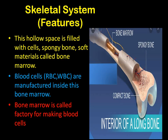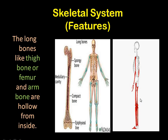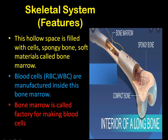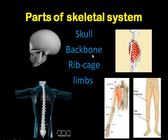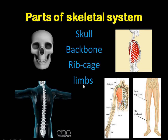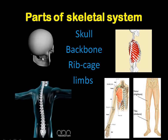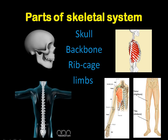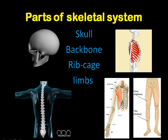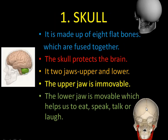This bone marrow is called the factory for making blood cells. In the long bones, we have bone marrow, and this bone marrow makes the blood for our body — that is why it is called the factory for making blood cells. Now there are four parts of the skeletal system: first is skull, second is backbone, third is rib cage, and fourth is limbs — limbs means your arms and legs.